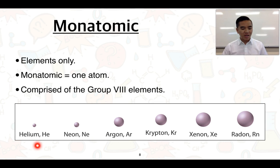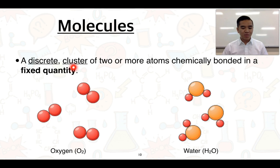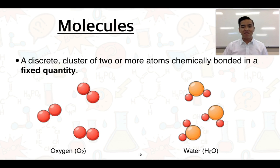So we've got helium, neon, argon, krypton, xenon, and radon — these would all be monatomic. The second structure is molecules. Molecules you have to think of as discrete units, and discrete means separate to one another. They are clusters — meaning groups of two or more different atoms, or even the same atoms, that can be combined chemically in a fixed quantity. Both elements and compounds can exist as molecules.